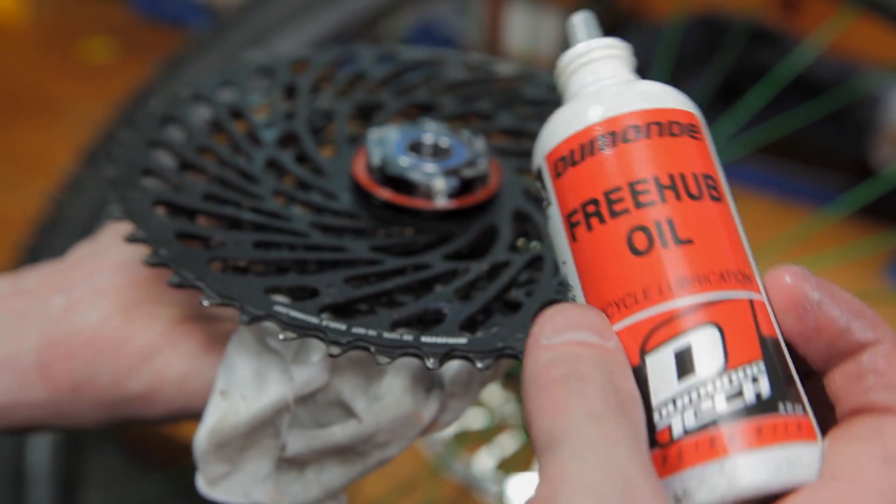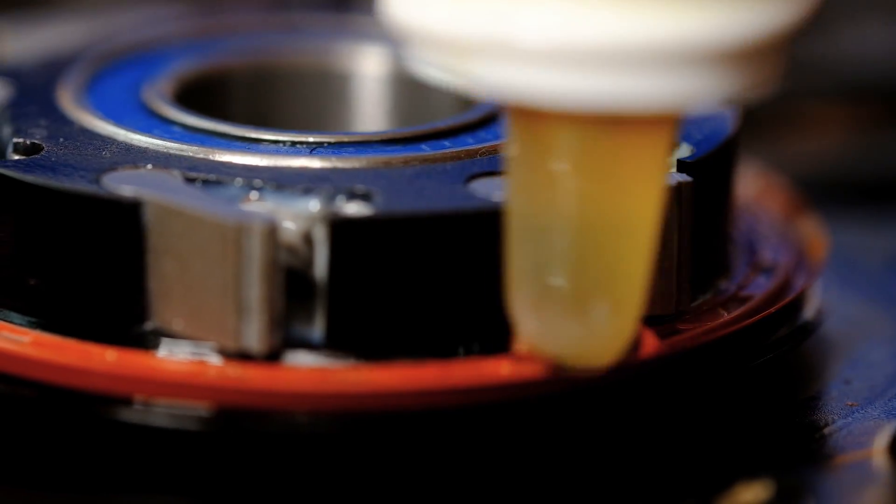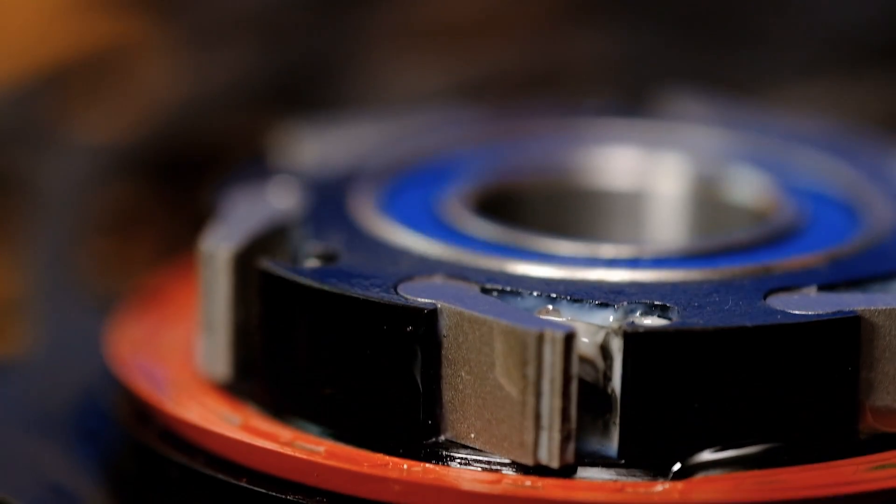With the pawls greased, you're ready to lubricate the oil seal. You'll want the Dumontech Freehub oil for this. Run a bead of oil along the outside edge of the seal.